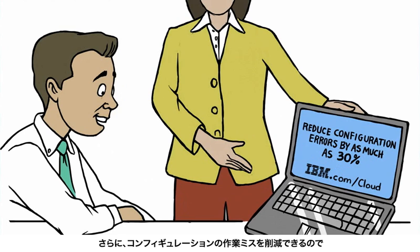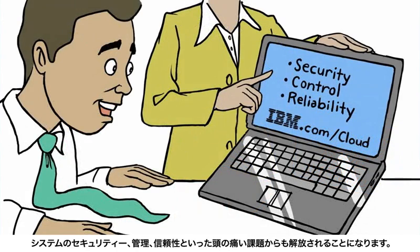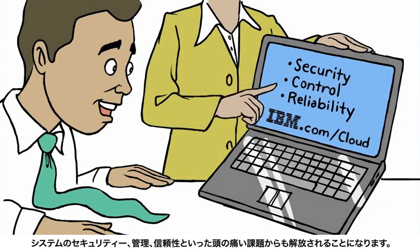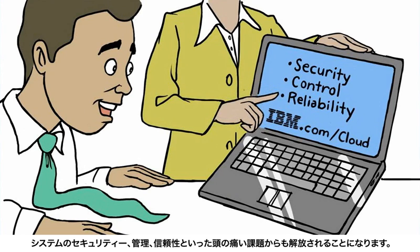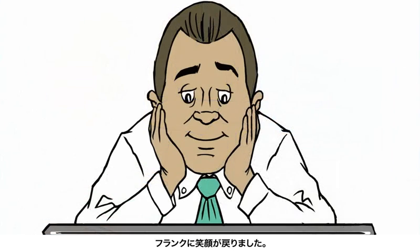And they can have peace of mind working in an environment that offers security, control, and reliability. Frantic Frank is suddenly a little bit less frantic.